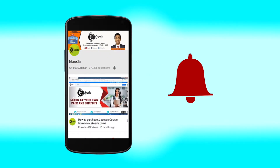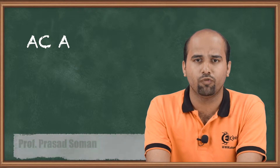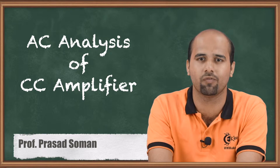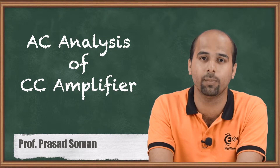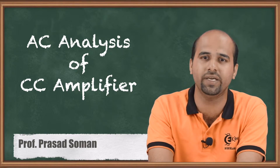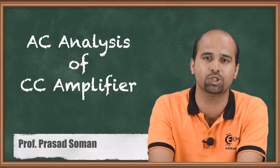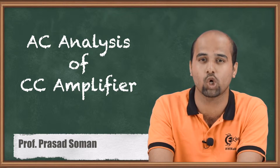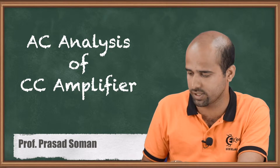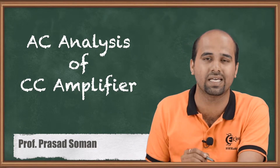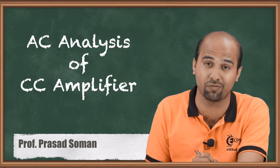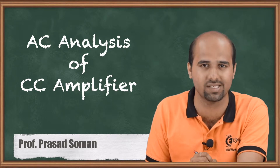Hello friends. In this video we'll do AC analysis of a CC amplifier. CC means Common Collector. In the common collector configuration, we get the output at the emitter terminal and we apply input to the base terminal. This is also called an emitter follower because the emitter is following the input voltage.